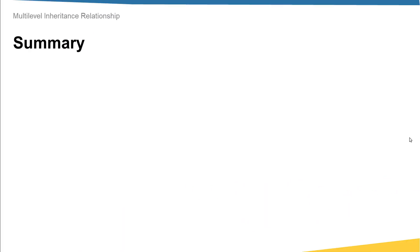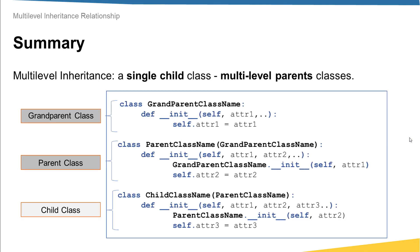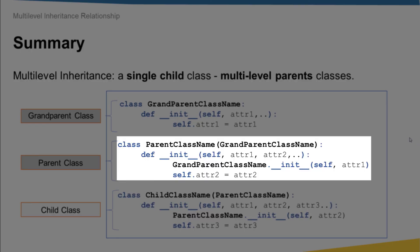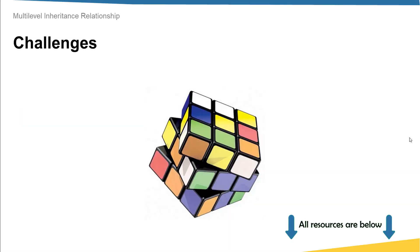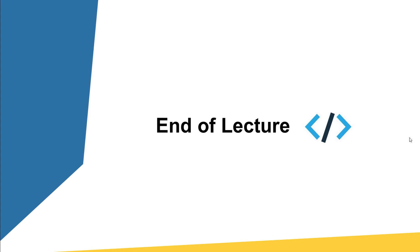Let's recap what we've learned. In this lecture we mainly talked about multi-level inheritance, where we have a single child class and multi-level parent classes. To define this relationship, the child class calls the parent class constructor, and the parent class calls the grandparent class constructor. Please refer to the challenges available in the lecture resources to practice what you have learned. Thank you and join me in the next lecture.